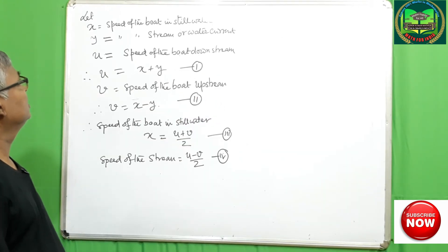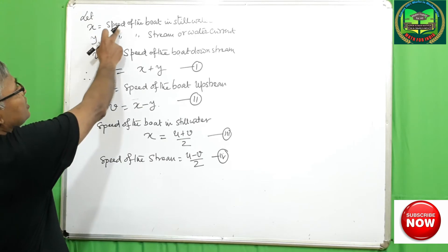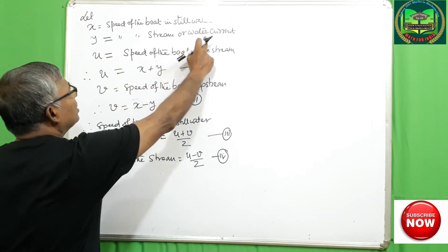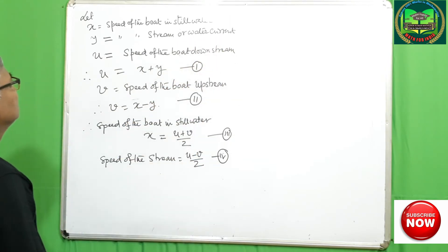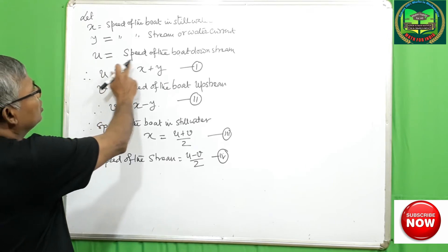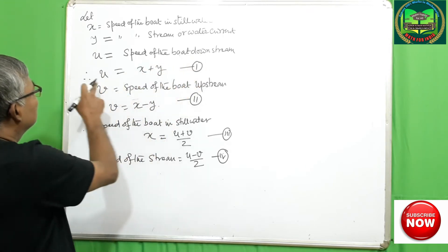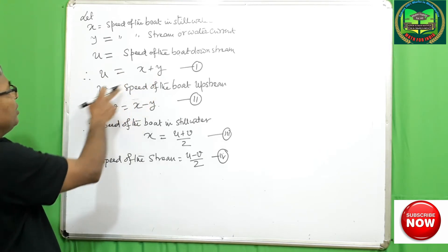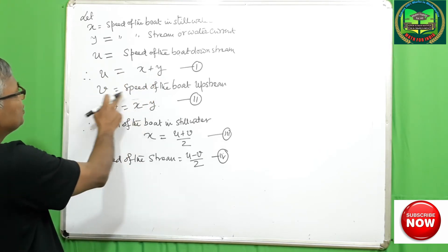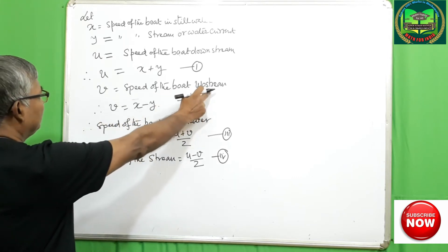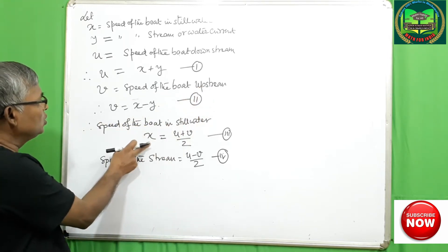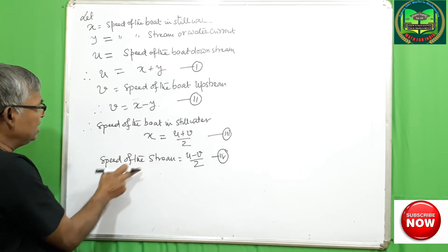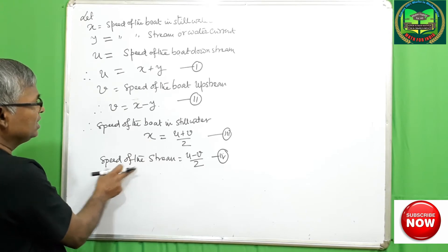To summarize: if X is the speed of the boat in still water, Y is the speed of the stream or water current, and U is the speed of the boat downstream, then U equals X plus Y, and V equals X minus Y — that is, the speed of the boat upstream. From these, X equals U plus V by 2, the speed in still water, and Y equals U minus V by 2, the speed of the stream.